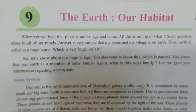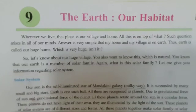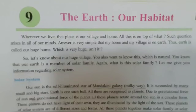Question number 6: Explain the following terms. Latitude: The horizontal imaginary lines drawn on the earth's surface are called latitudes. The total number of latitudes is 181.